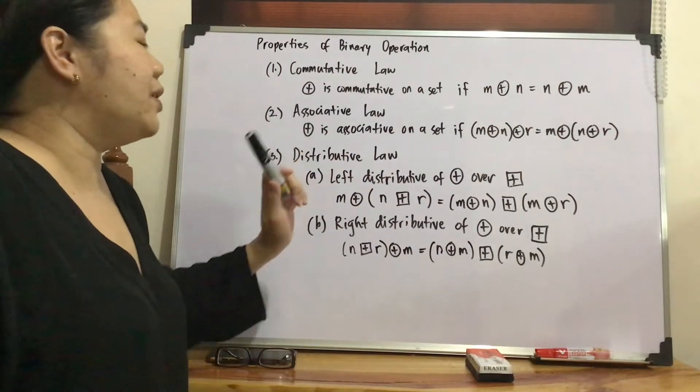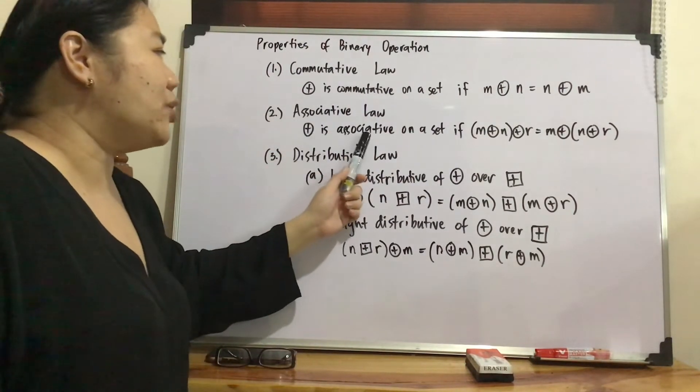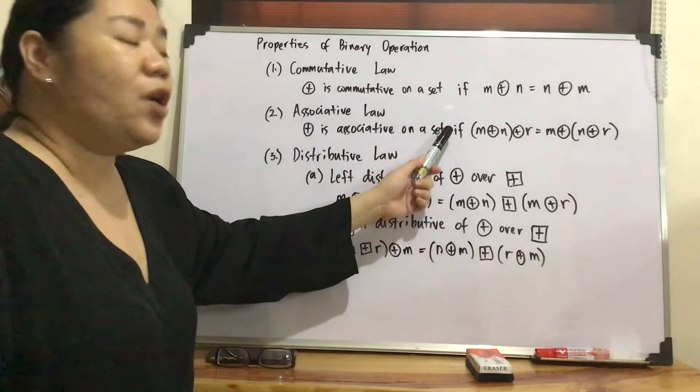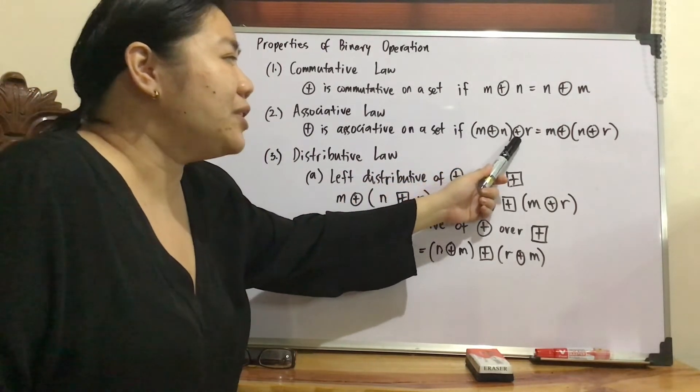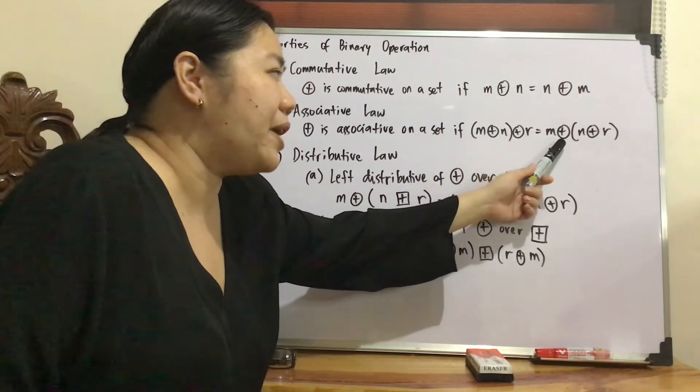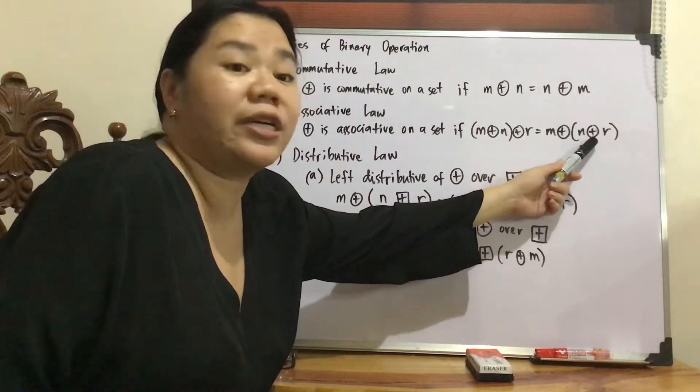Next, we have associative law. So plus circle is associative on a set if quantity M plus circle N plus circle R is equal to M plus circle quantity N plus circle R.